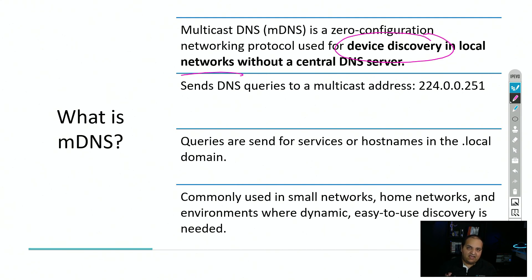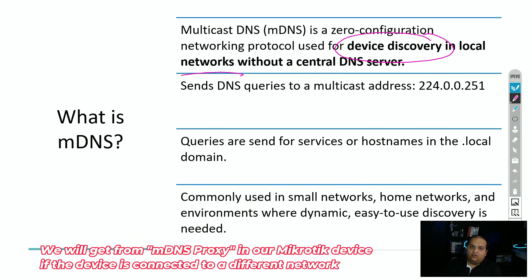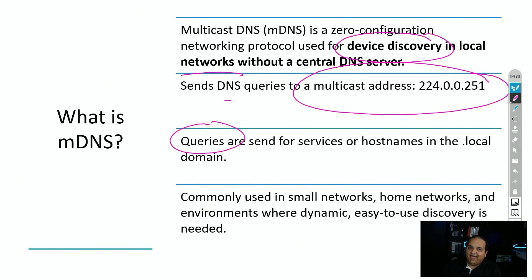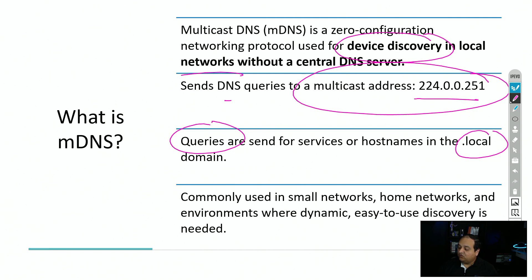This works fine if the printer is connected in the same network, but what happens if we are in a different network? When a device sends those DNS queries, it uses the multicast address 224.0.0.251 as the destination, and those queries target services ending with .local. Any device that supports mDNS — a printer, Apple device, Google Chromecast — joins the multicast group 224.0.0.251 and has a domain name ending with .local mapped to its IP.